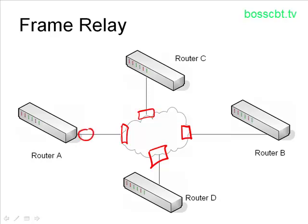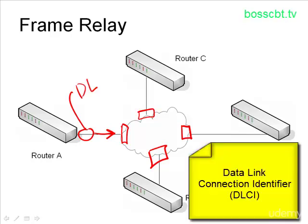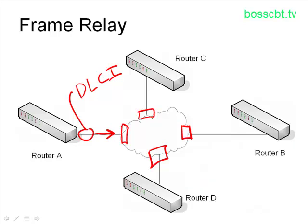Let's say router A is going to create a packet and send it on the wire to the Frame Relay switch. That packet is going to be examined, and the Frame Relay switch is going to look for something called the Data Link Connection Identifier — often referred to as the DLCI, D-L-C-I. This DLCI is usually just a number, and it indicates the destination of that packet. The Frame Relay switch has been configured and knows about all the possible DLCIs in this network, so it looks at it and routes the packet on to router B.